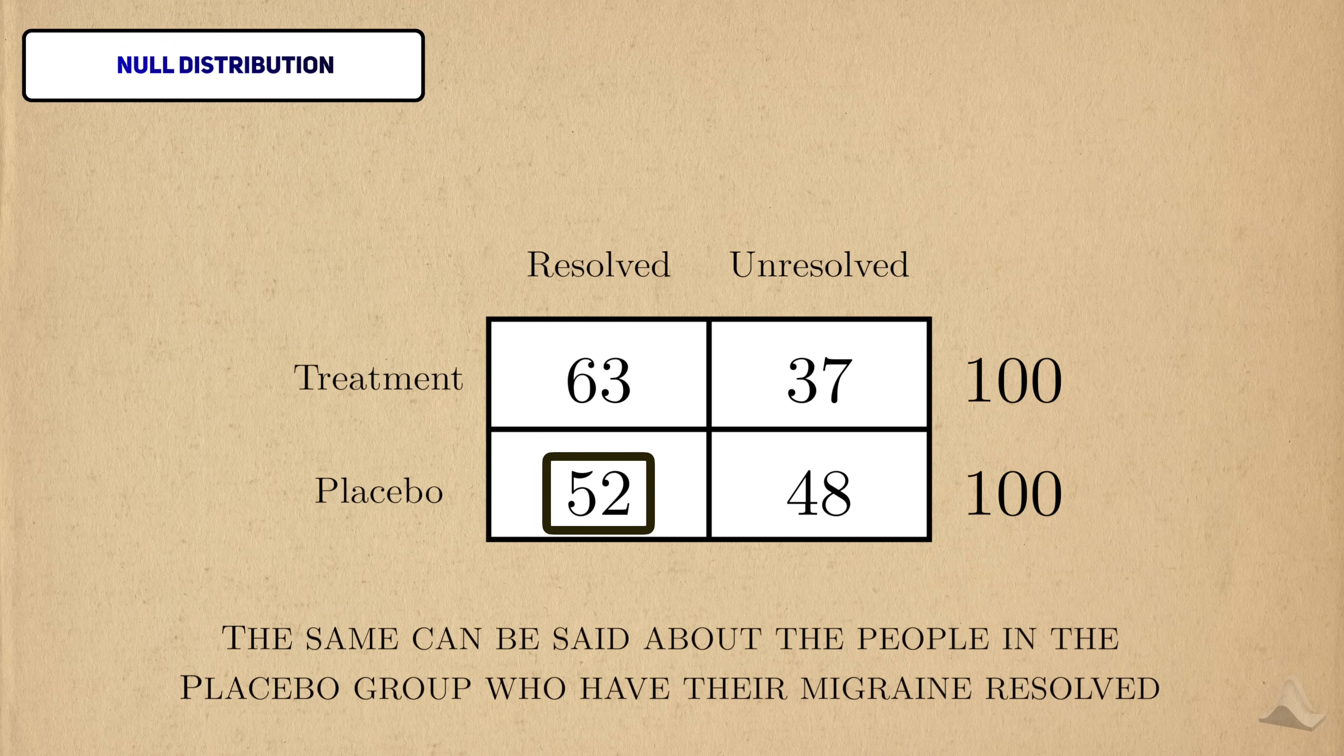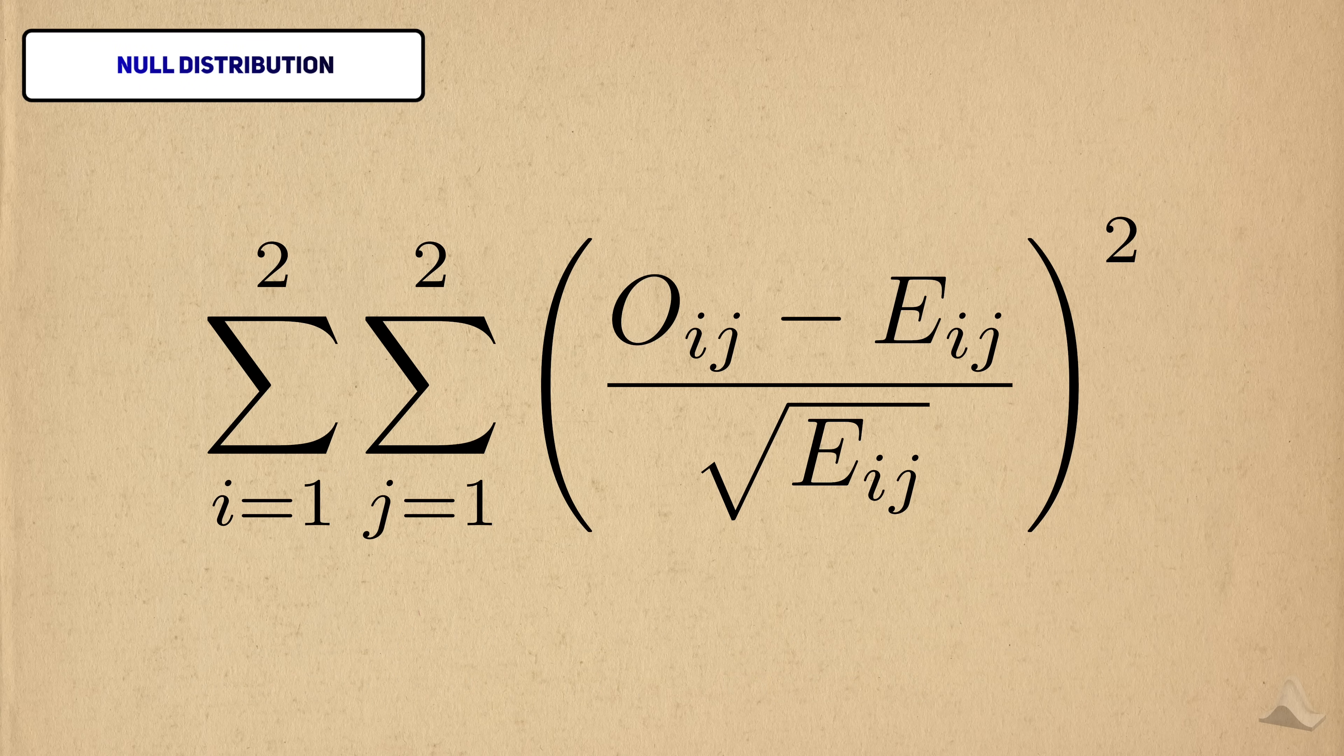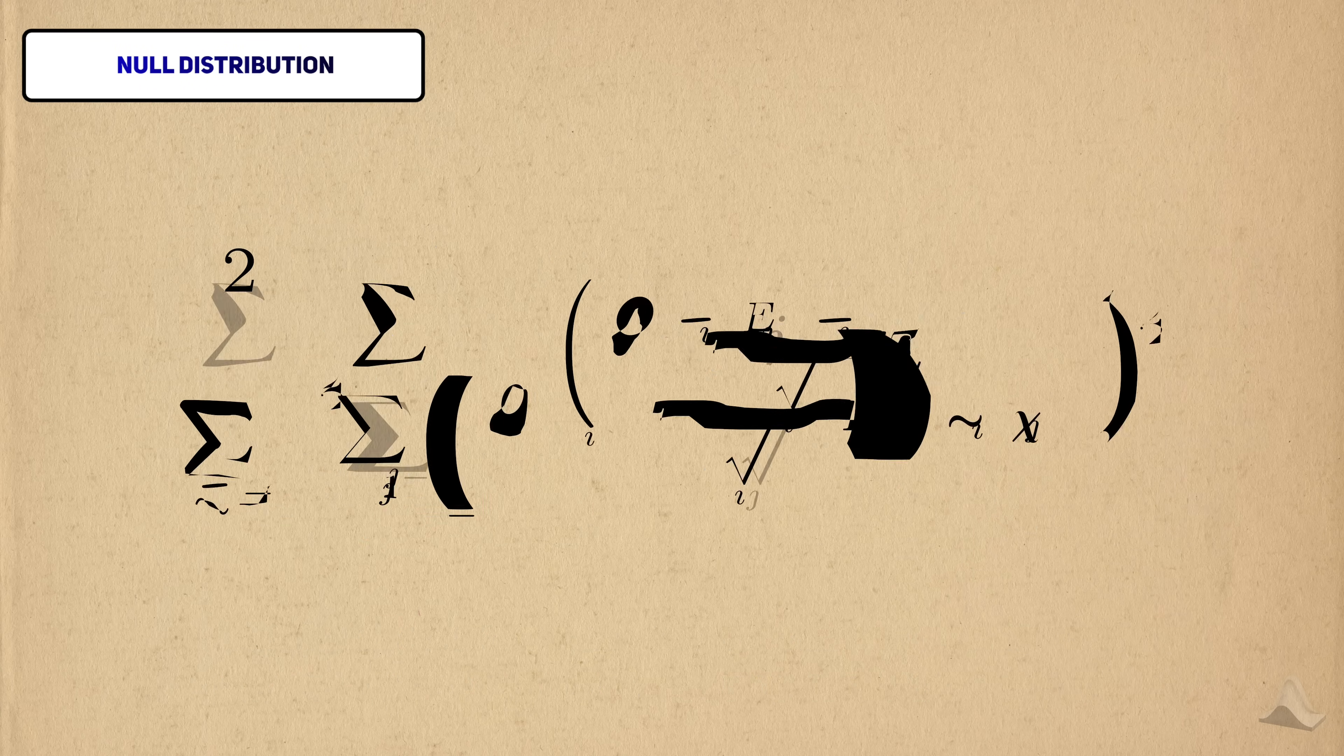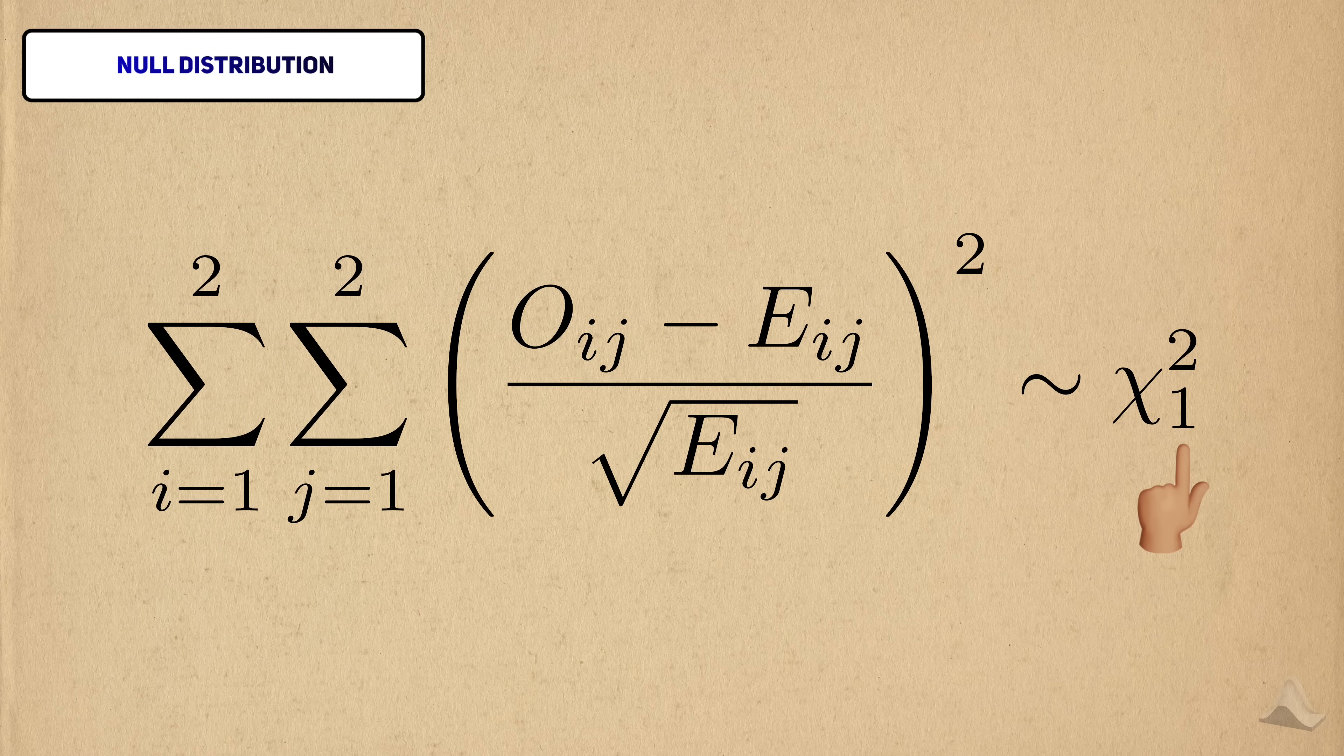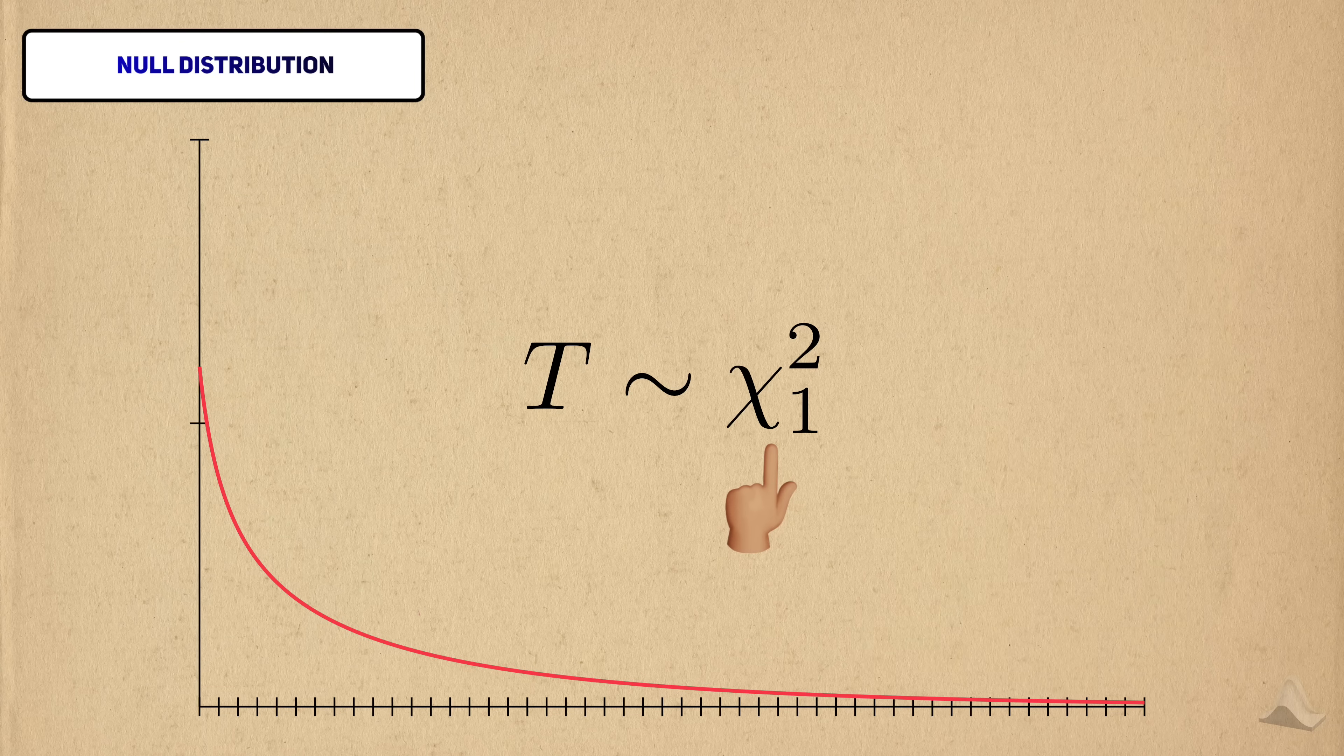The constraints of the contingency table reduce the degrees of freedom of the chi-squared distribution. In the end, the null distribution created by a two-by-two contingency table is a chi-squared distribution with only one degree of freedom, despite the fact that we're summing four squared normals.